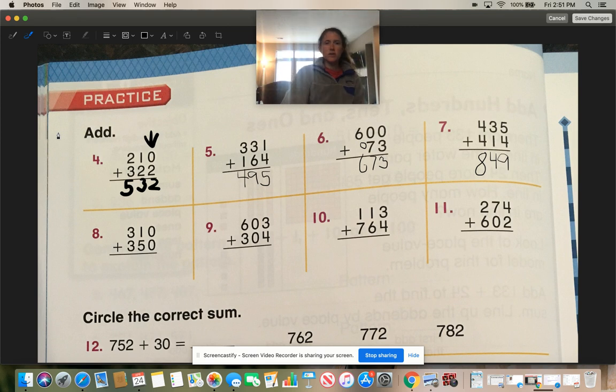Okay, you should be ready to check those answers. 0 plus 0 is 0. 1 plus 5 is 6. 3 plus 3 is 6. 660. 3 plus 4 is 7. 0 plus 0, easy, 0. 6 plus 3 is 9. Now number 10: 113 plus 764. 3 plus 4 is 7. 1 plus 6 is 7. 1 plus 7 is 8. 877.